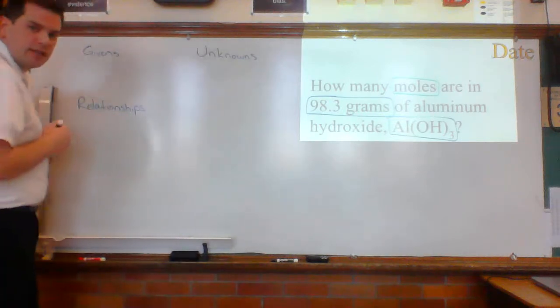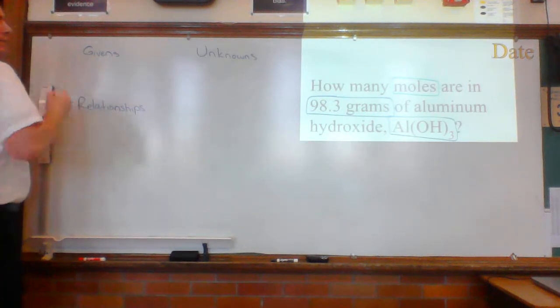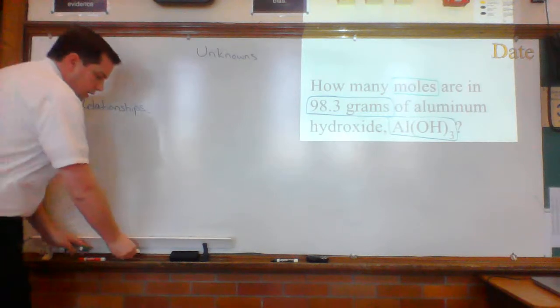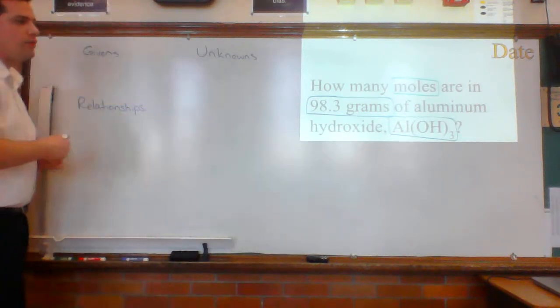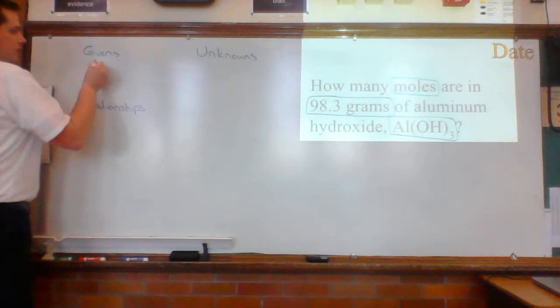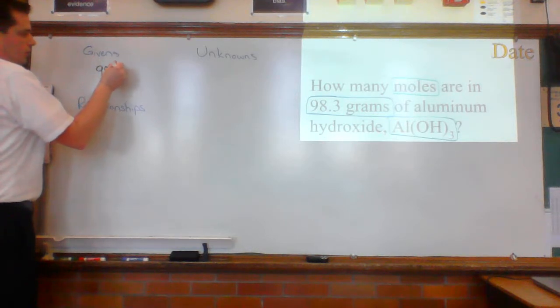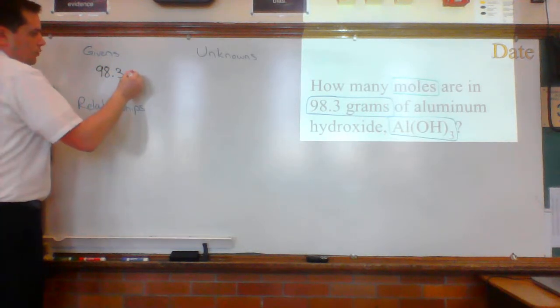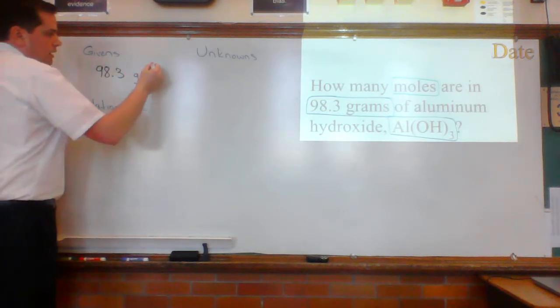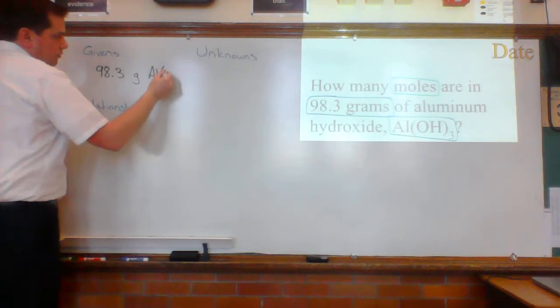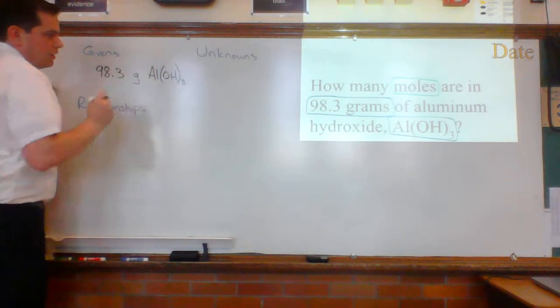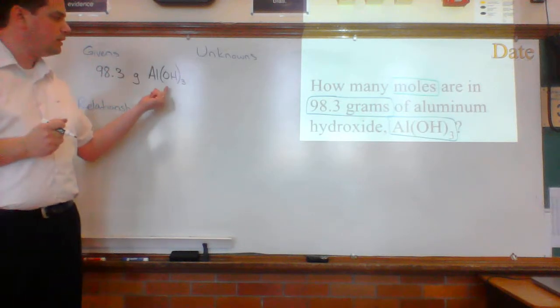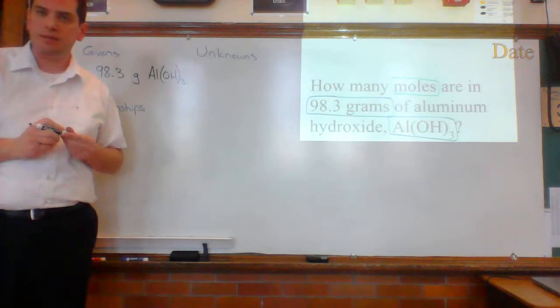I'm going to use the Guster method to list out my givens and my unknown. In this case, I have only one given. That is 98.3 grams, AL, parentheses, OH, 3. Number, unit, chemical. Don't forget any piece of that.